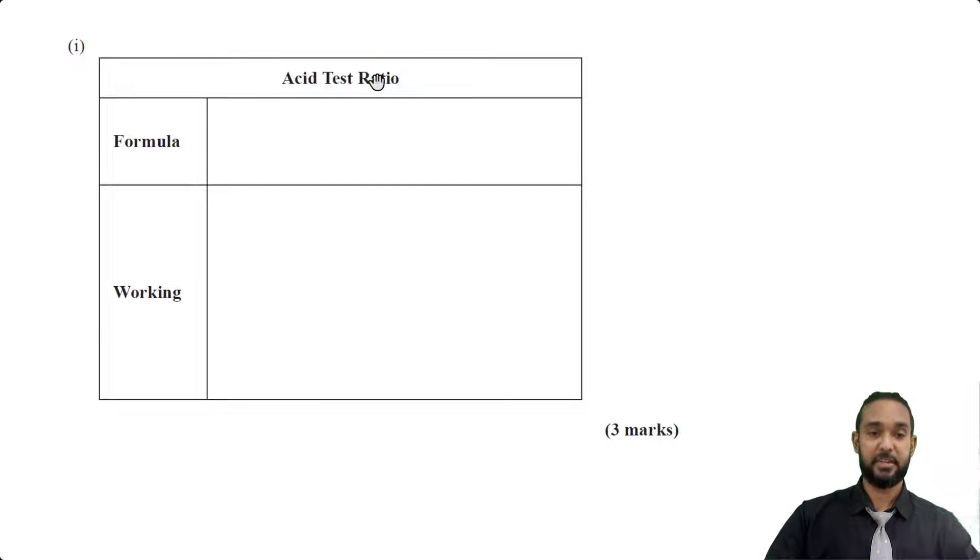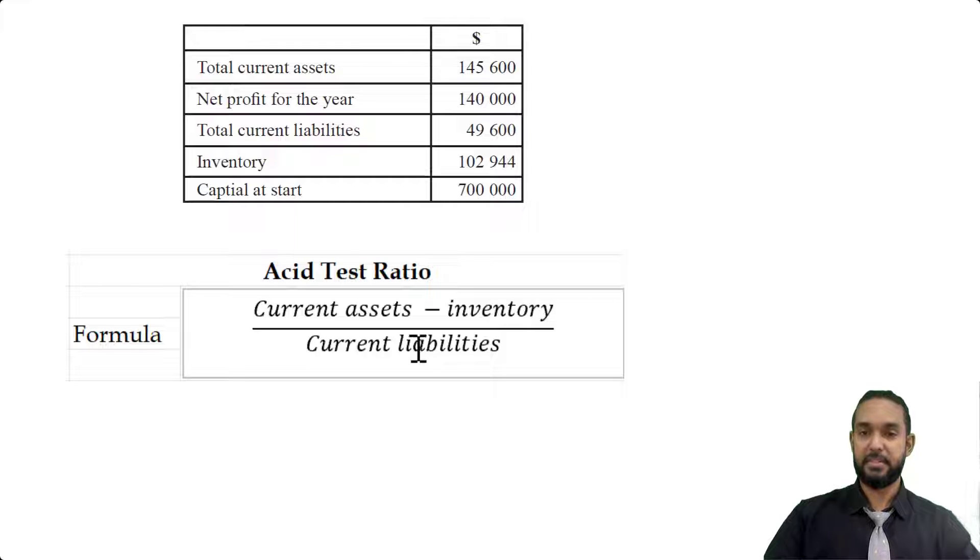So the formula for the asset test ratio is current assets minus inventory over current liabilities. Now again, according to how high you go in accounting and what syllabus you are learning, you may have a different formula. I have seen different formulas for this ratio, but for CSEC POA, this is a perfectly acceptable formula. So we have total current assets of 145.6, we have inventory of 102.944 and current liabilities of 49.6.